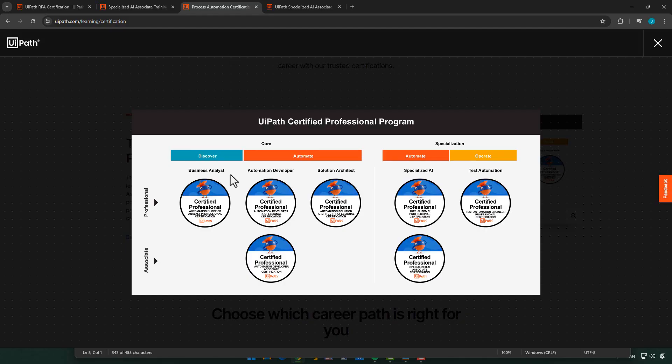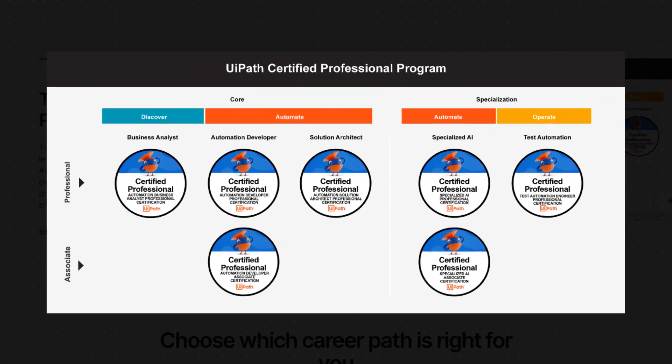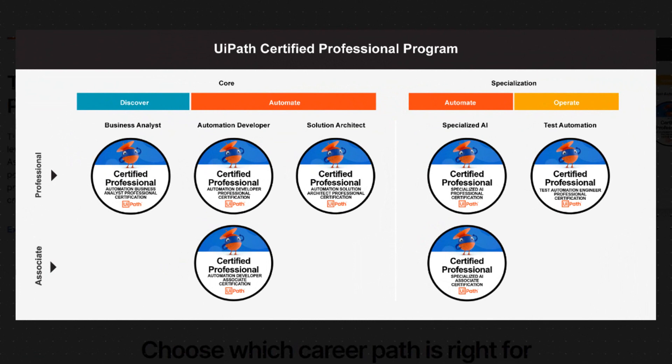UiPath is constantly evolving and expanding its certification program. If we look at the program as a whole, we can see that it is divided into two main areas: the core area and the specialization area. In each of those two areas there are two levels — the Associate Level, which is the easier level, and then the Professional Level, which is much more difficult.